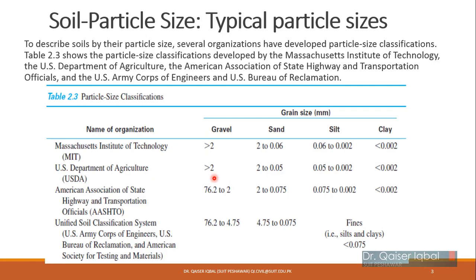The USDA, or US Department of Agriculture classification, is commonly used and we will later see their triangular shape soil classification system. They commonly deal with sand, silt, and clay. This classification is almost similar to MIT. The only difference is that in USDA, the lower limit for sand is 0.05 mm instead of 0.06 mm, and similarly 0.005 instead of 0.006 for silt. The classification for clay remains the same. So the only slight difference is in the lower range of sand and the higher range of silt.